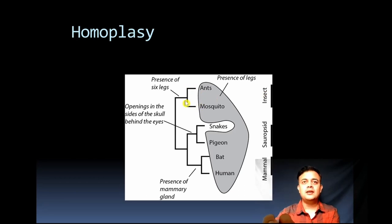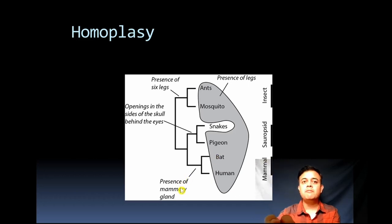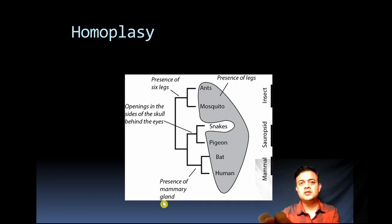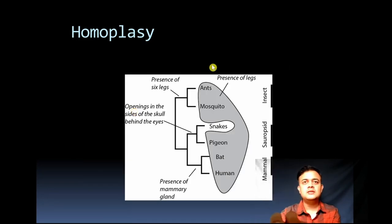Ants and mosquitoes are insects — the synapomorphic character state is the presence of six legs or appendages. The group of bats and humans is a clade called Mammalia, and the synapomorphic character of this clade is the presence of mammary glands — an evolutionary innovation. Such evolutionary innovations are known as synapomorphic character states.